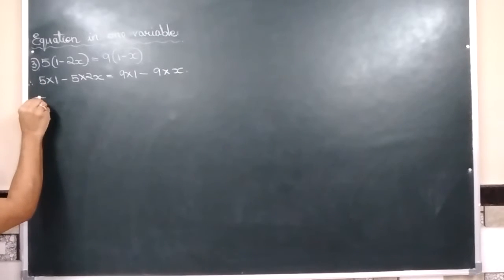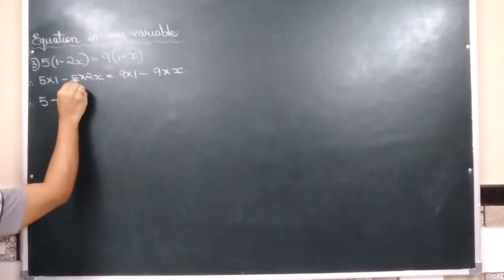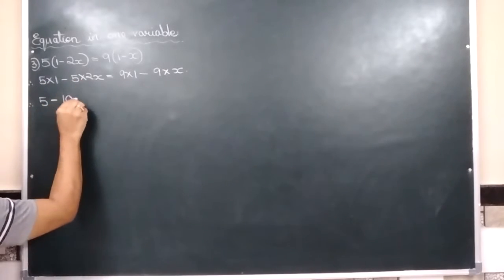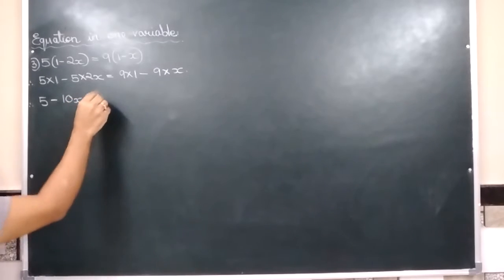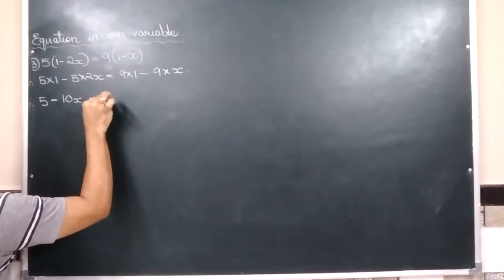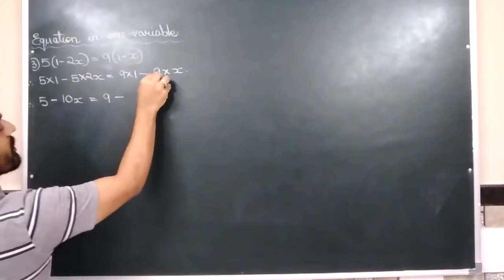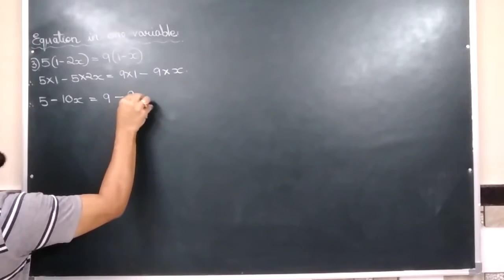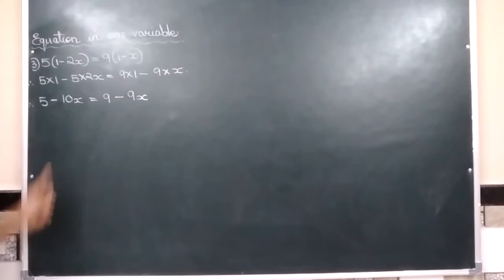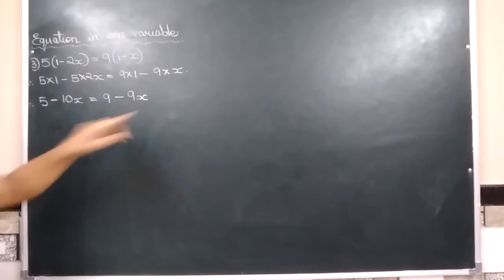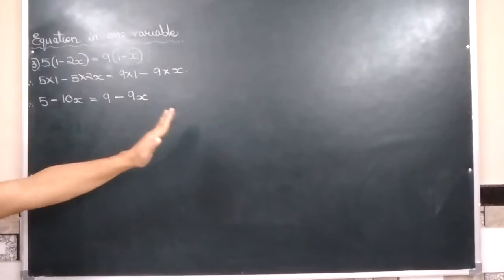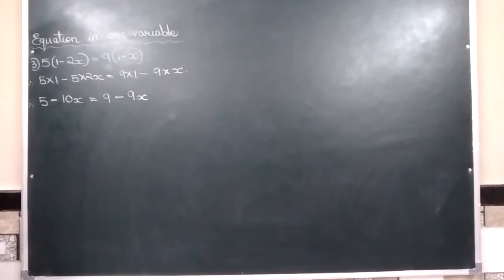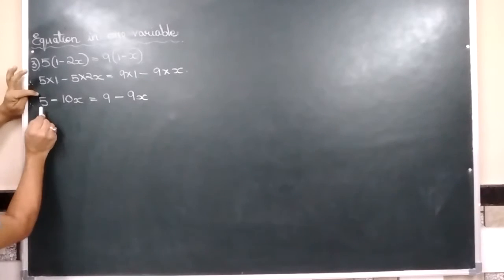5 multiplied by 1 zha 5 minus 5 multiplied by 2 zha 10x is equal to 9 zha 9 minus 9x zha 9x. Aur phir equal to ke left mein sabhi x ke term aajayenge aur equal to ke right mein sabhi number aajayenge. So right now you see,